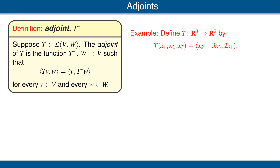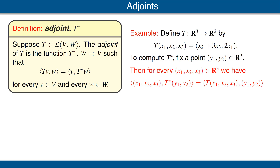Let's look at an example, which should help clarify what's going on. Let T be the linear map from R3 to R2 defined as you can see on the screen now. Thus, T star will go in the other direction from R2 to R3. To compute T star, we fix a point Y1, Y2 in R2.